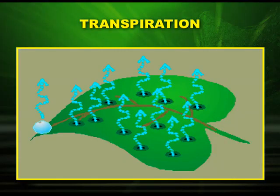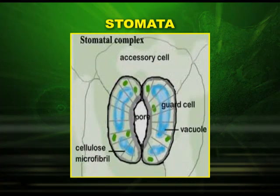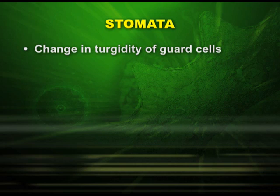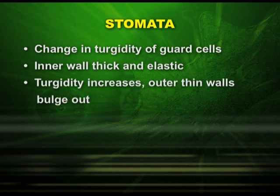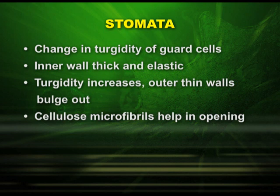You can see water in the form of water vapor lost from the surface of leaves through the stomata, which are generally present on the underside of the leaves. To understand transpiration, let us look at the detailed structure of stomata. The stomata have two guard cells. The microfibrils help in the opening and closing of stomata, which is due to a change in turgidity of guard cells. An important feature is that the inner wall is thick and elastic and the outer wall is thin. When turgidity increases, the outer thin wall bulges out and the cellulose microfibrils help in the opening of stomata.